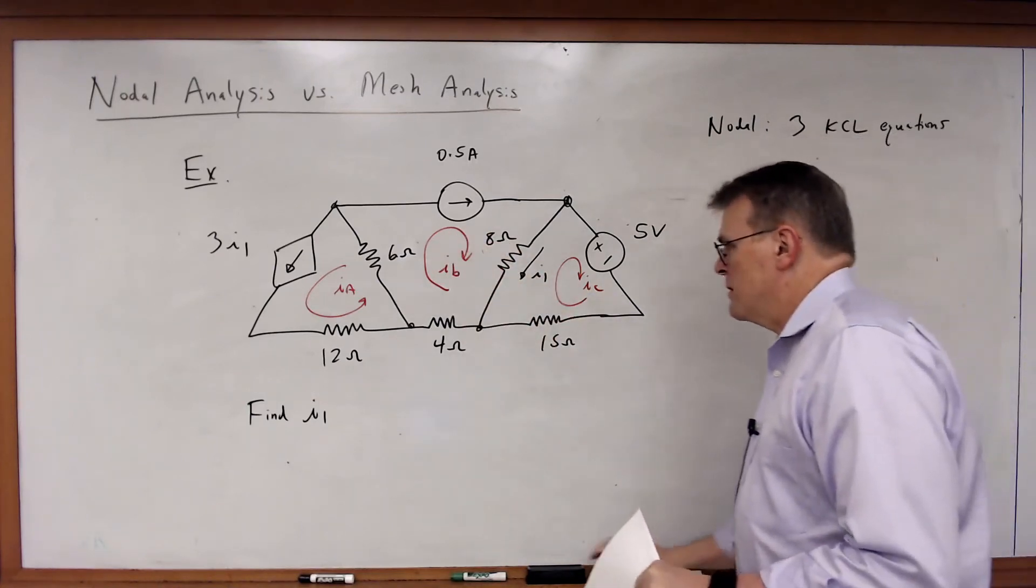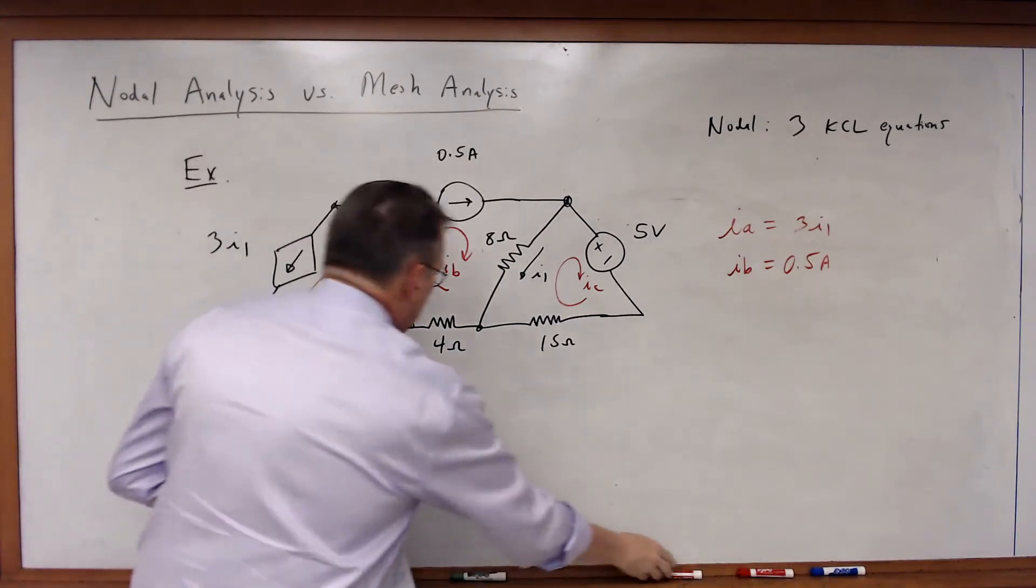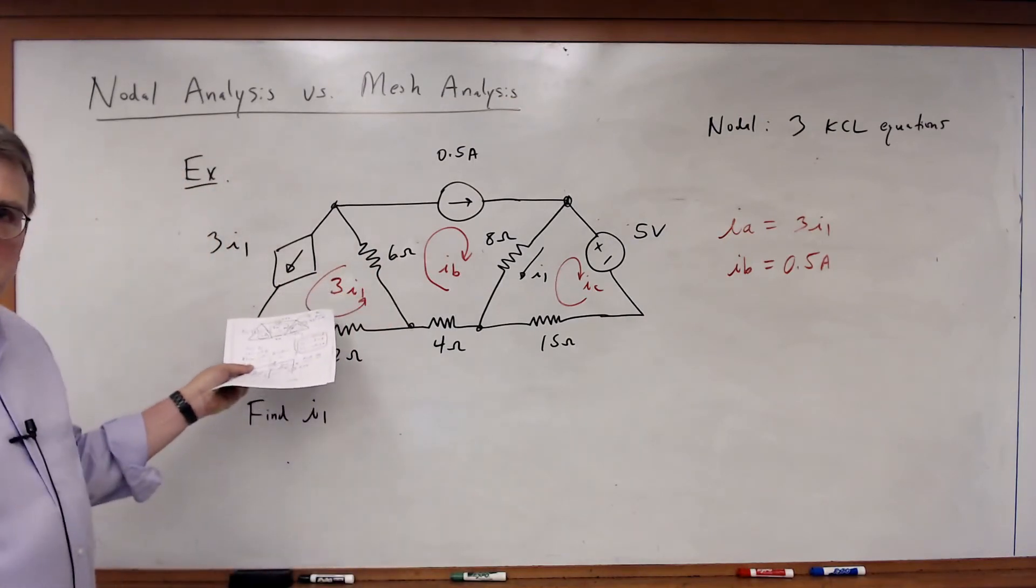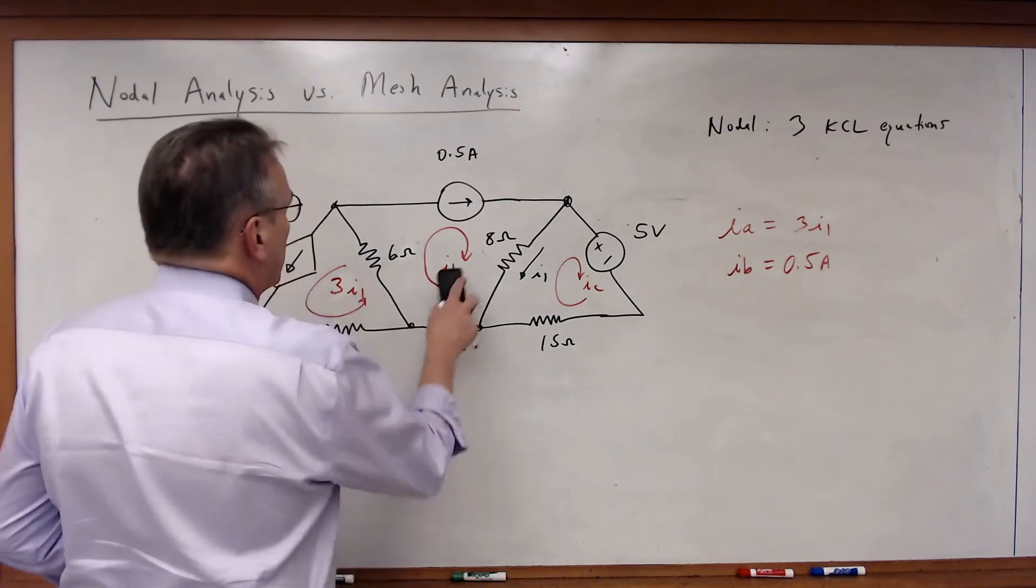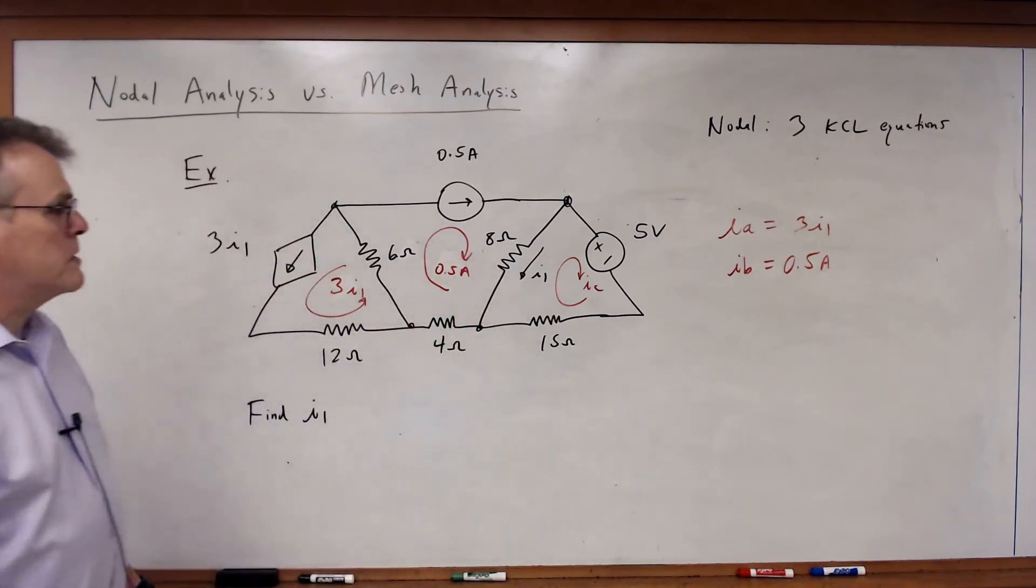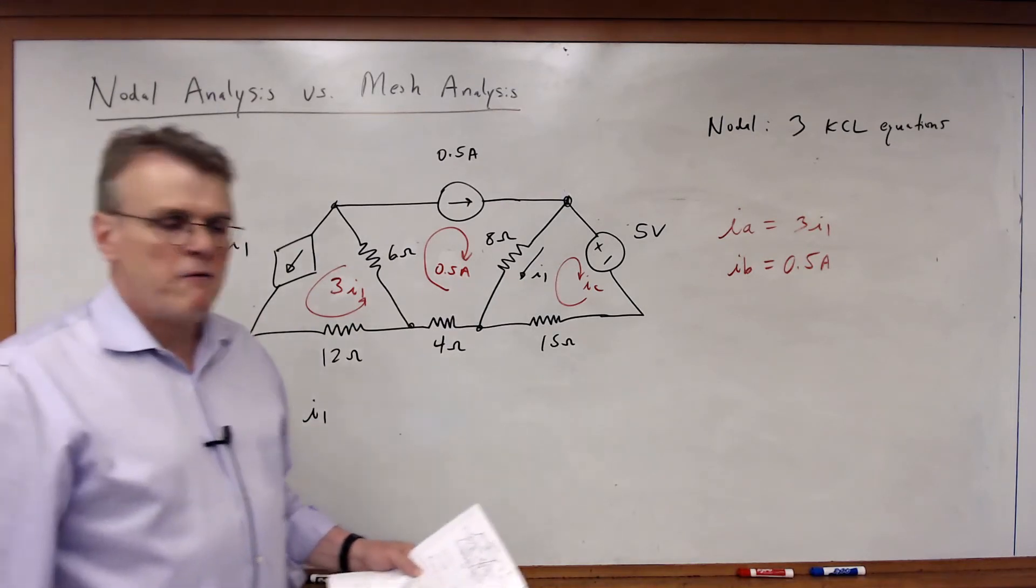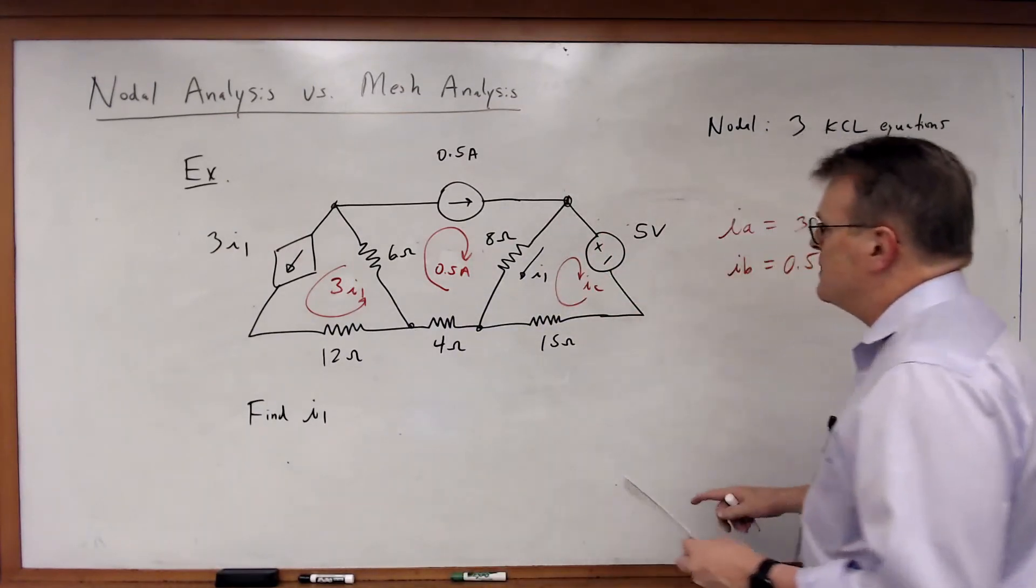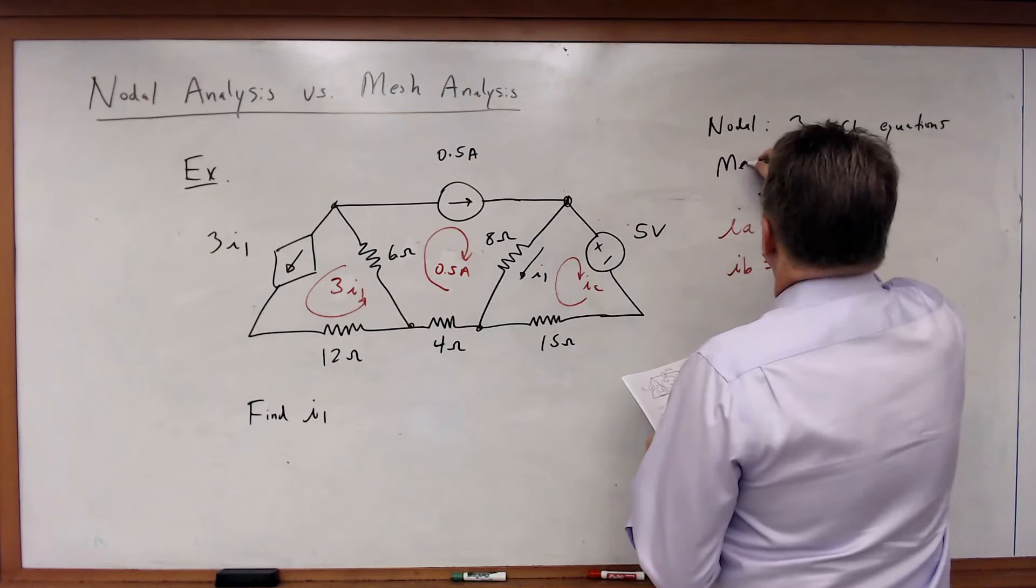And let me show you a little shortcut people will use on problems like this. When you have a defined mesh, lots of times people will just do this. They won't bother to write IA. They'll just go ahead and write 3I1. That's the mesh current. Why give it a variable name? Over here, they'll say this is half an amp, 0.5 amps. So really, all you have to write is that IC. That's the only unknown mesh current, and therefore it's the only KVL equation you need. So in this case, you've got for mesh analysis, you've got one KVL equation.